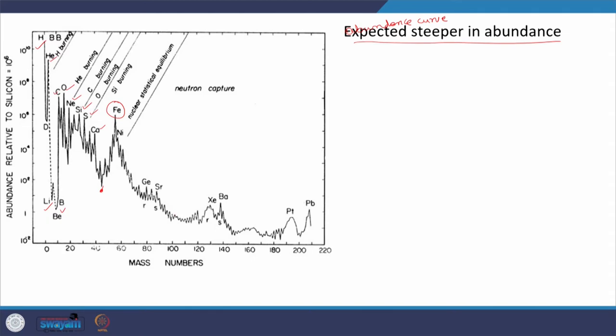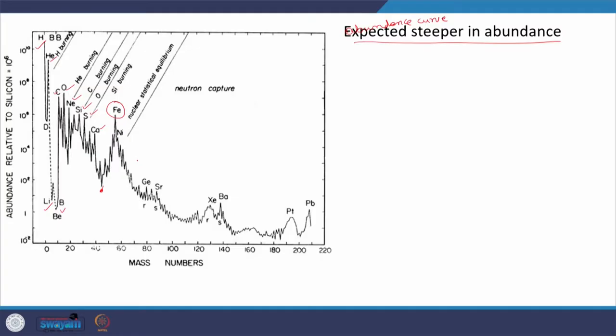If that trend continues, then the curve after iron is expected to continue steeply downward. But the observed data is above what that extrapolation would predict. So people thought: if charged particle induced reactions and photo-disintegration reactions are happening up to the formation of elements around the iron peak, then why cannot they continue after iron?